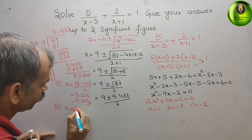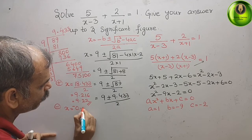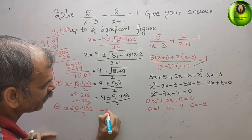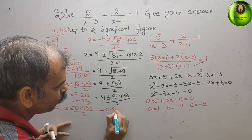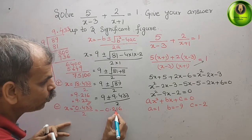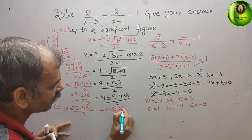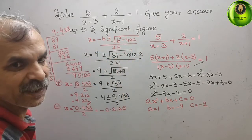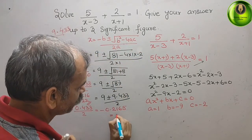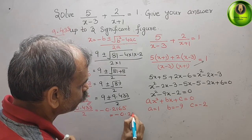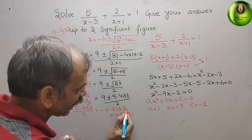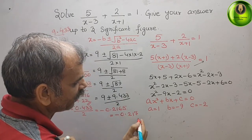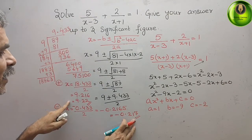Taking the minus case: x = (9 - 9.433) / 2 = -0.433 / 2 = -0.216. To 3 significant figures, x = -0.216. So our two answers are x = 9.22 and x = -0.216.